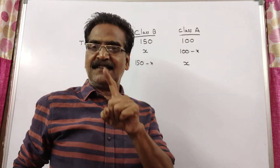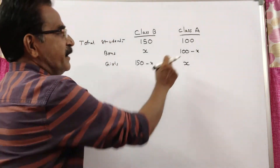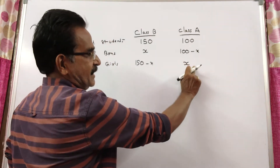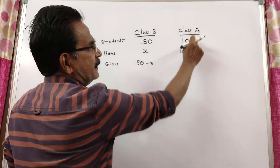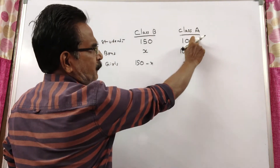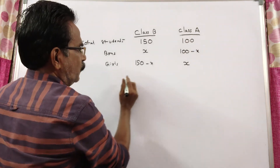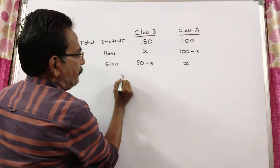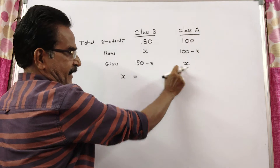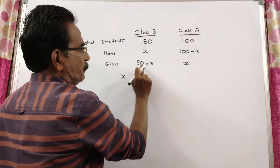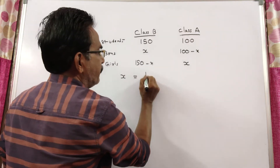The percentage of girls in both classes is the same. So in class A, the percentage of girls — total number of students is 100 — is X over 100 into 100. The percentage of girls in class A is equal to the percentage of girls in class B.